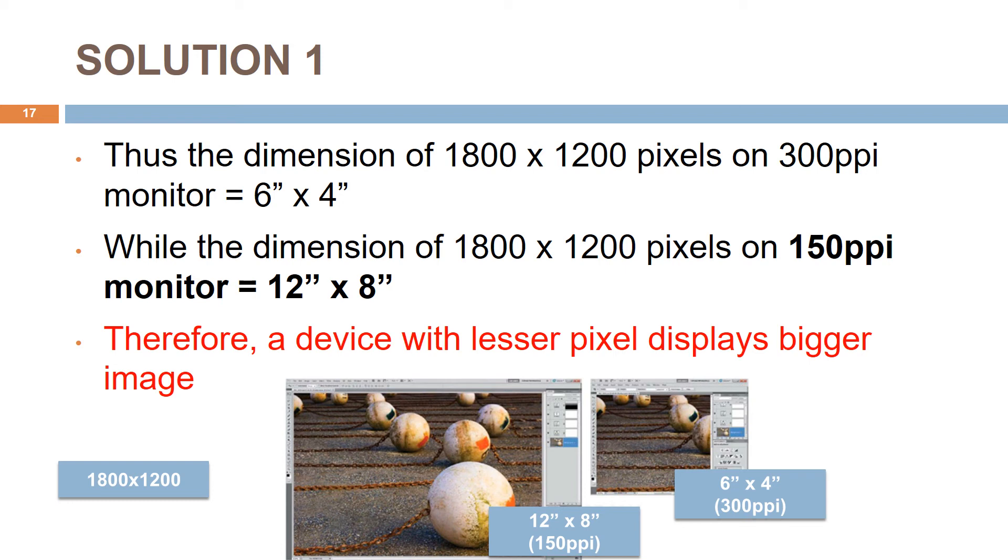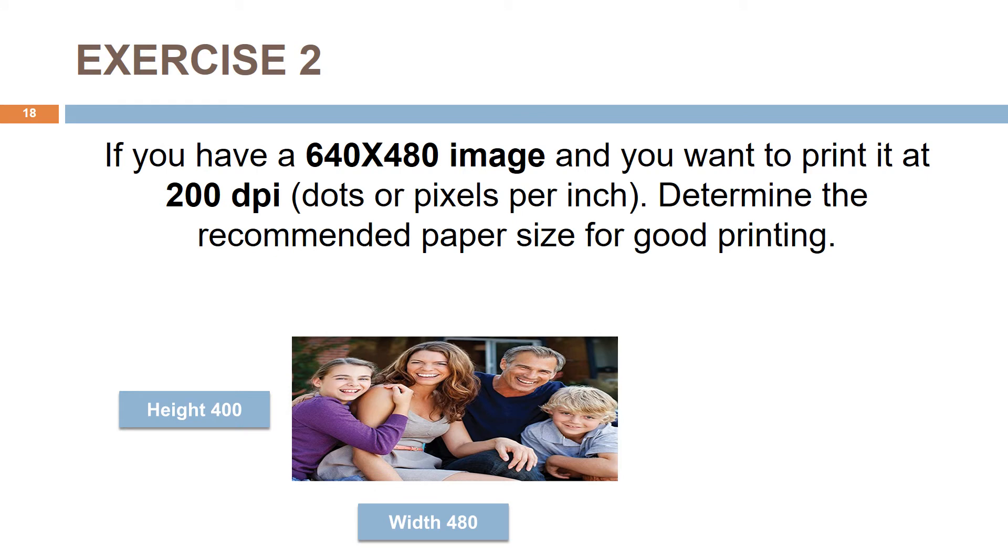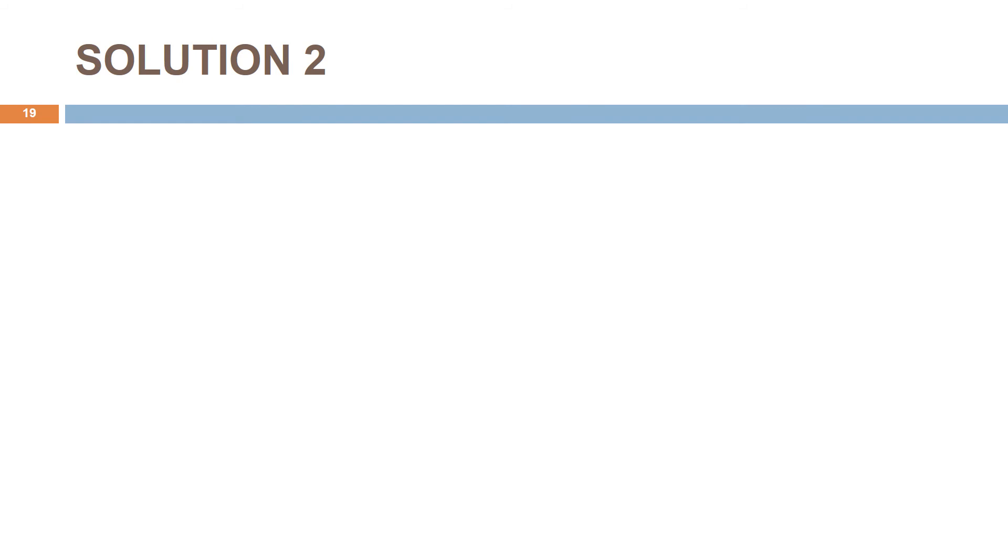This is another exercise on how to determine the best printing quality for your photos. If you have a 640 x 480 image and you want to print it at 200 PPI, determine the recommended paper size for good printing. Here is the solution: again divide the height and width of your image with the device resolution. Your recommended paper size will be 3.2 x 2.4.